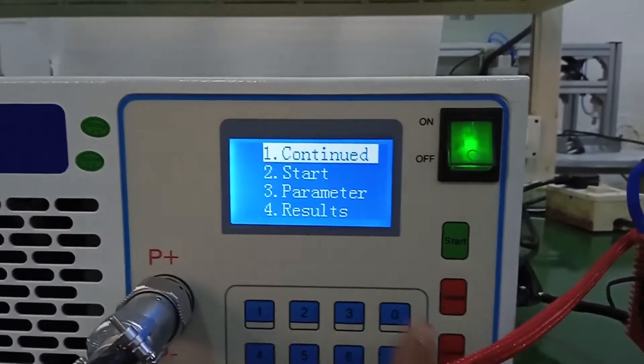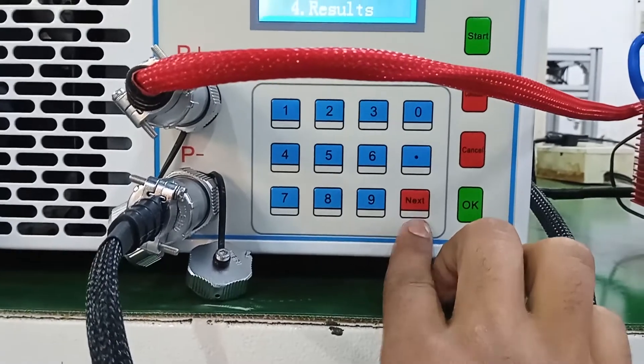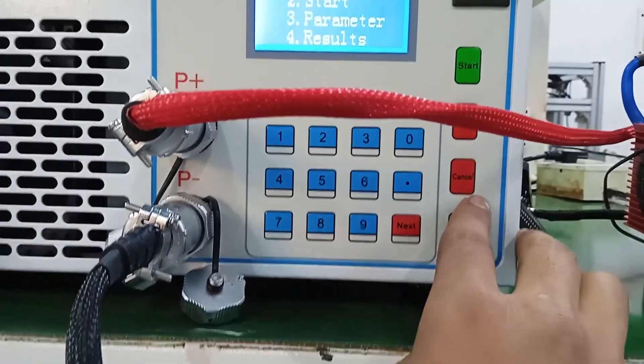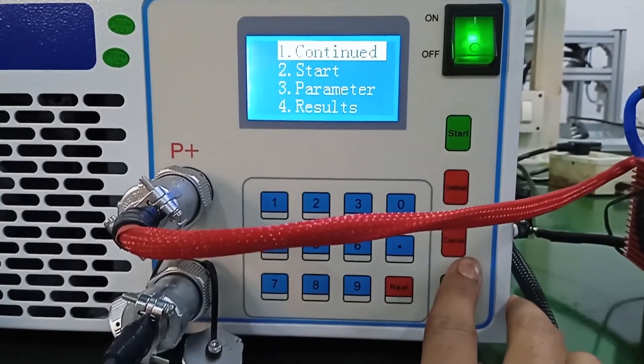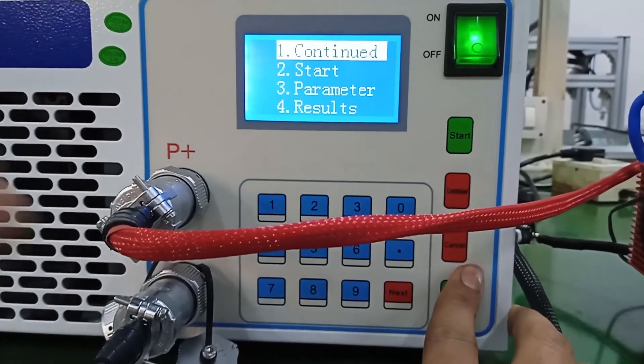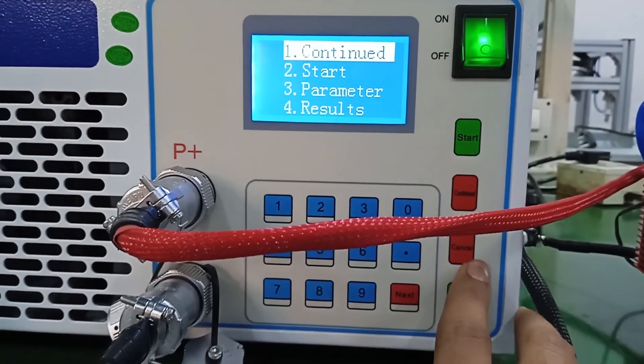And the other thing is the numerical parameter buttons. You can see there is a next button, OK button. Cancel means to cancel your setting or to return back from next step to previous step. You use this button.